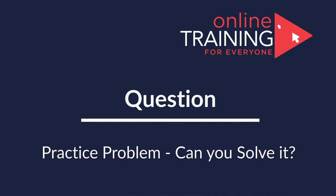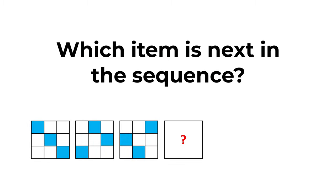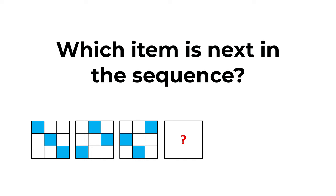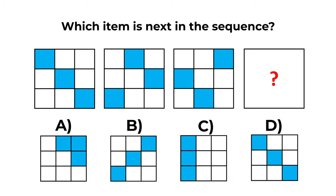Here's a practice question for you. You need to determine which item comes next in the sequence. You're presented with three large squares, each containing nine small squares of different colors. The fourth square is missing, and you have four choices: A, B, C, and D. Post your solution and rationale in the comments so I can give you feedback. Thanks for participating and good luck.